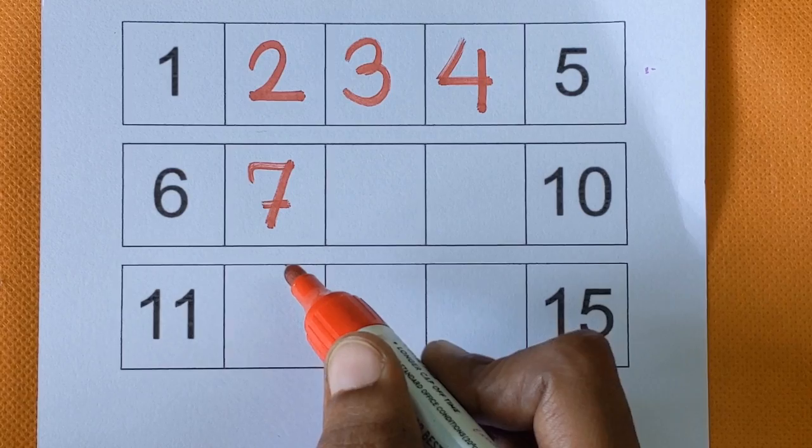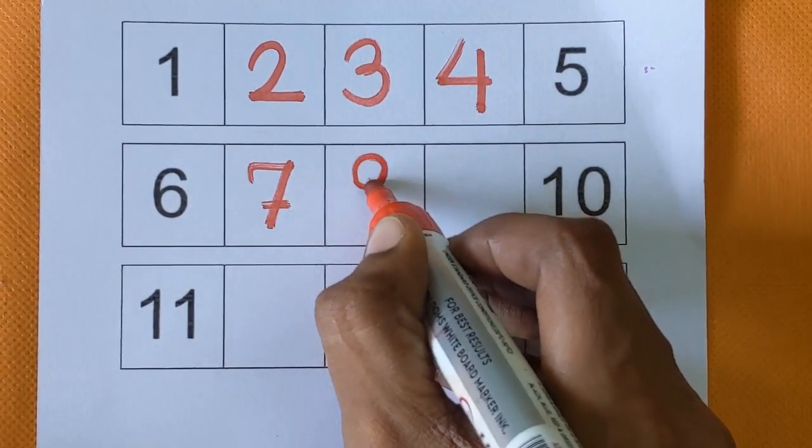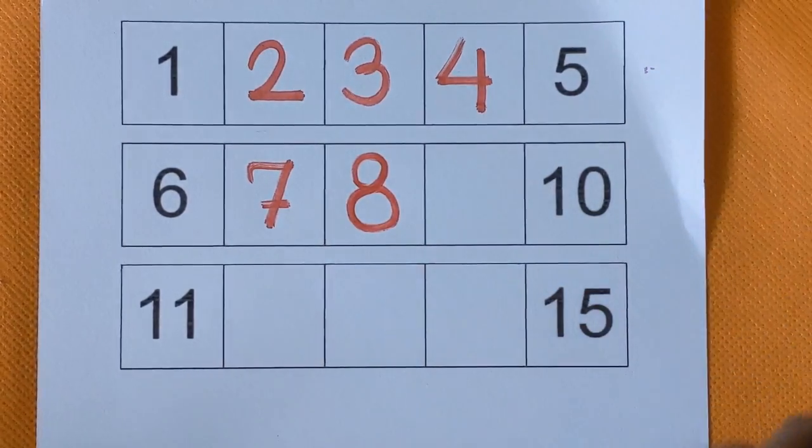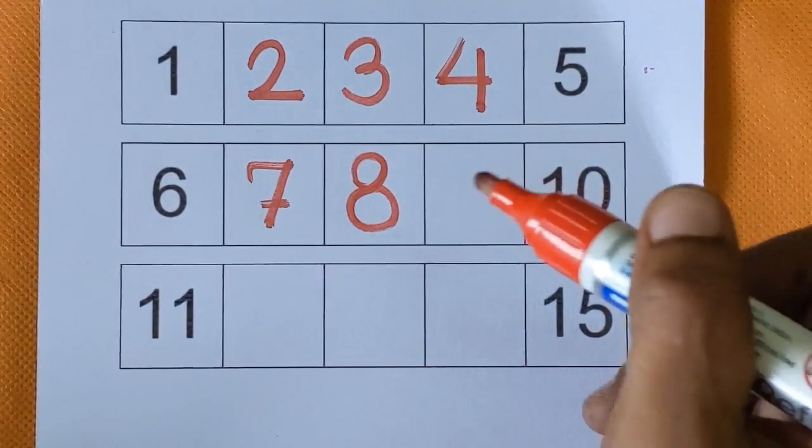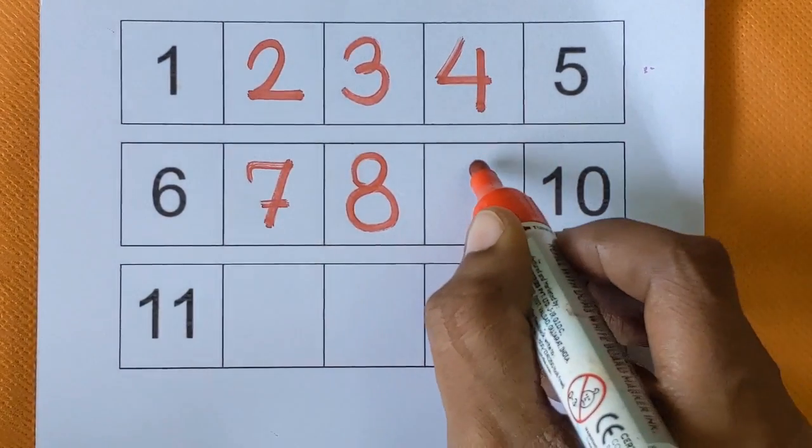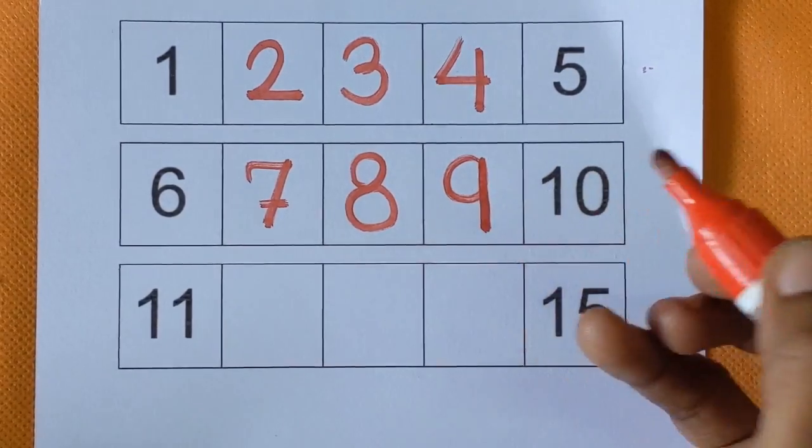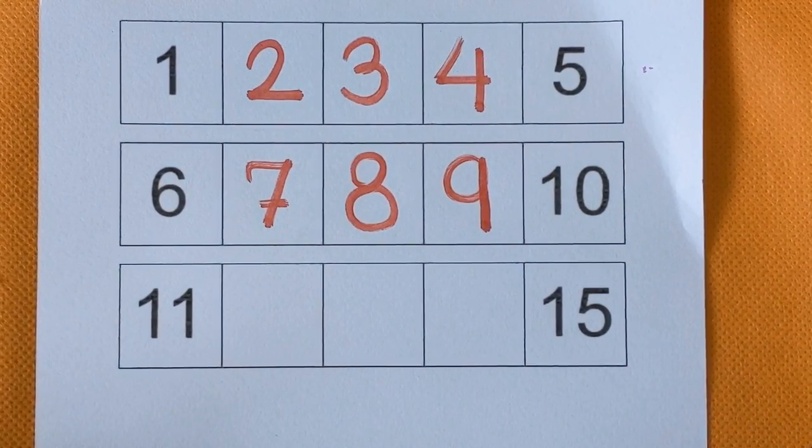Which number comes after number 7? It's a number 8. Okay? 8 number is missing here. And after 8, next, number is number 9. Number 9.